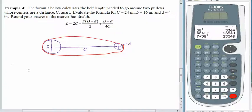Let's fill in what we know. L is equal to 2 times C. And C is 24. Remember, hold that value in parentheses so we remember that we are multiplying. Plus pi. Capital D is 16. Little d is 4. Denominator of this fraction is 2. Plus. The numerator of the next fraction is 16 plus 4. And the denominator is 4 times the 24. 4 times C.